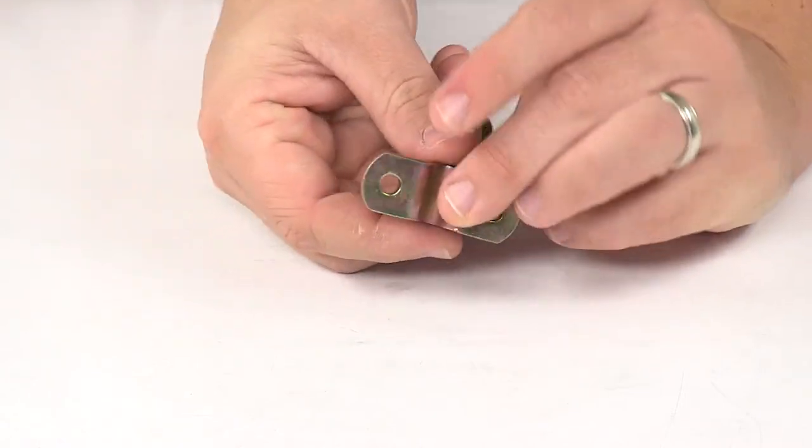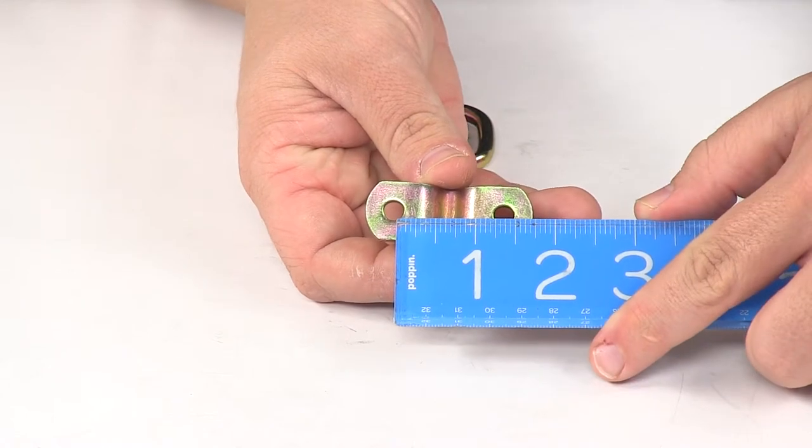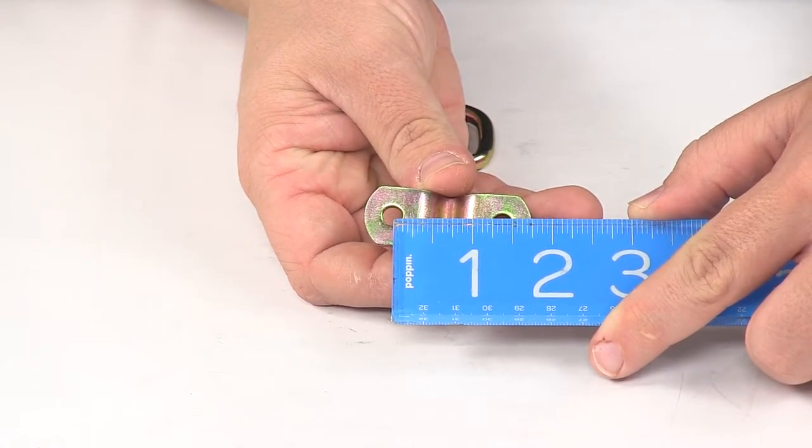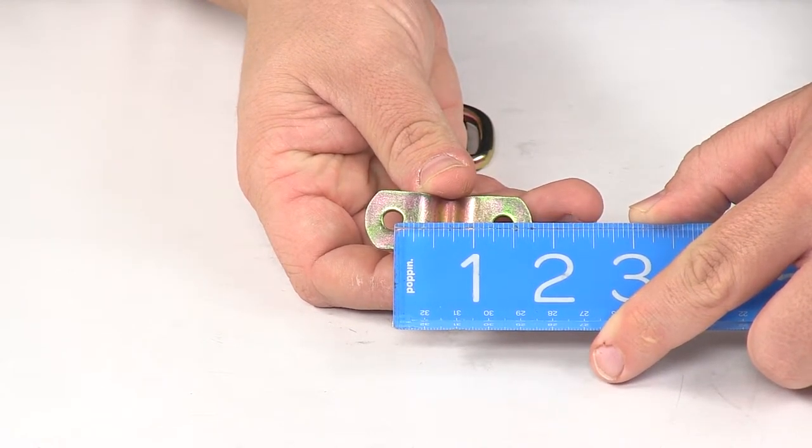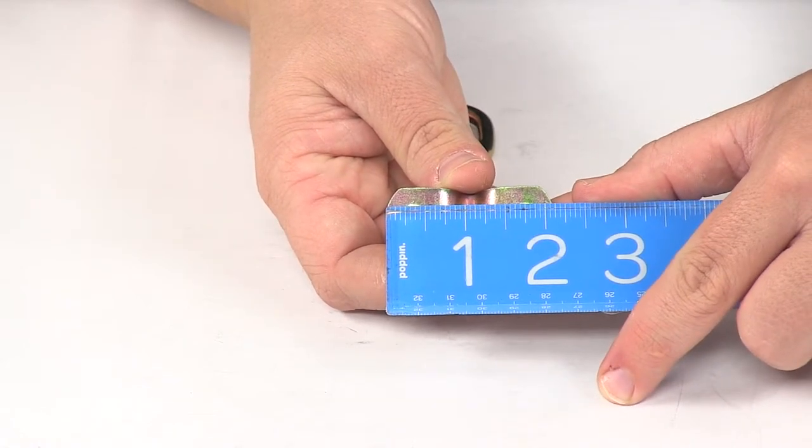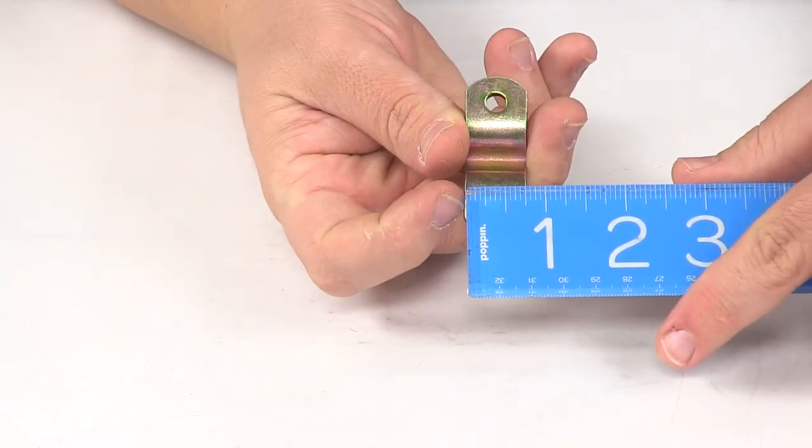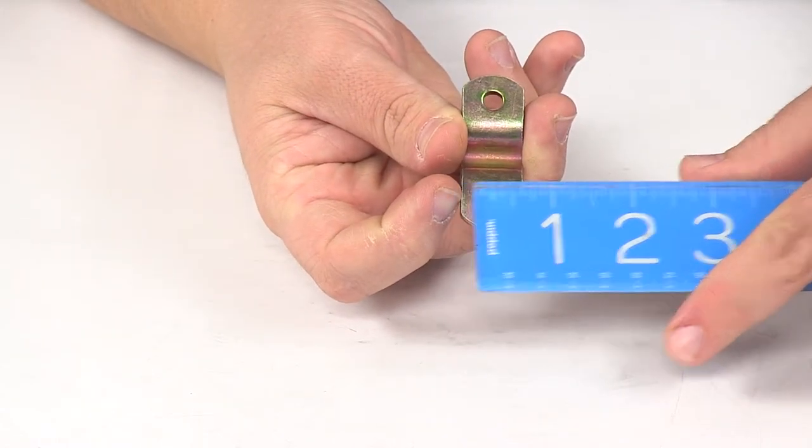This right here is our mounting bracket. The mount holes on the unit are separated on center by one and three-eighths inches. The bracket itself, edge to edge, measures two and one-eighth by three-quarters of an inch.